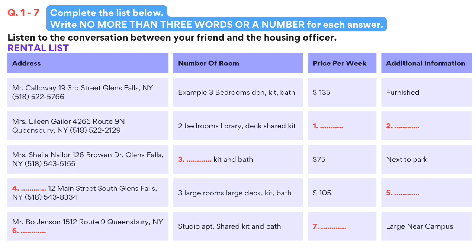What about the one on Route 9N? It looks like it's big with a library and a deck, but it doesn't say how much it costs or anything else about it. Oh yes, Mrs Gaylor's apartment. That one is actually only a 10 month rental and it is going for $156 per week. It's quite a nice place. She only rents for 10 months each year because of horse racing season. Then her relatives all come to stay, so tenants have to move out. It's a little bit inconvenient, but past tenants have really enjoyed their stay there.